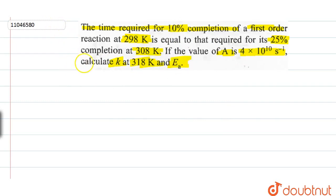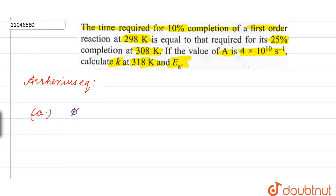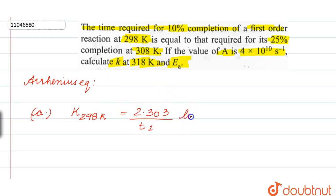First of all, we have the Arrhenius equation. We need to calculate k using 2.303 and the Arrhenius equation, which equals 100.